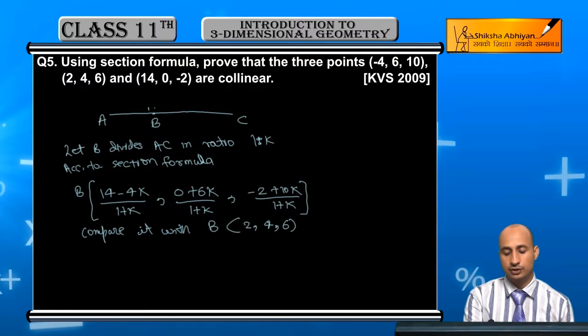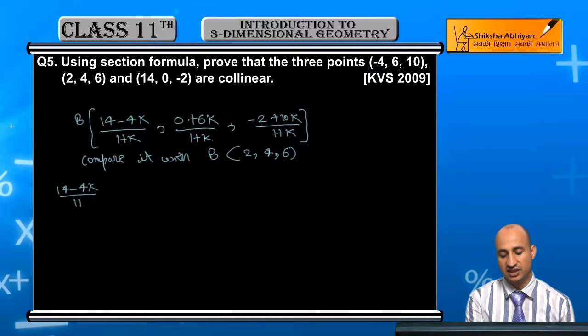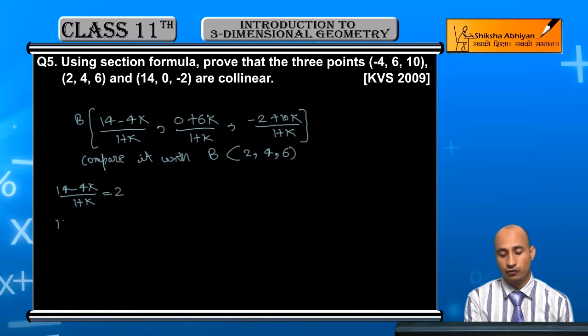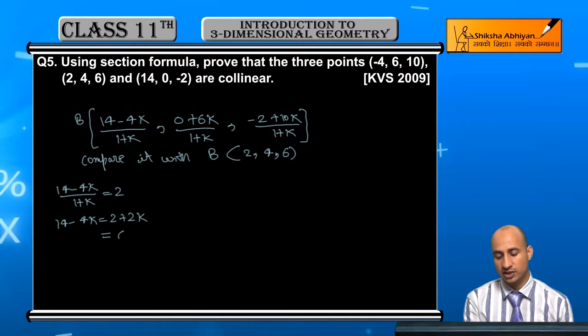So when I compare, first of all, (14 - 4k)/(1 + k) is equal to 2. That is, 14 - 4k is equal to 2 + 2k. Now 4k I take to the right, so it becomes plus. So this will be 6k.